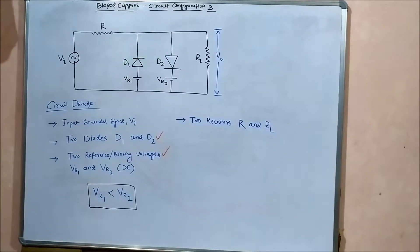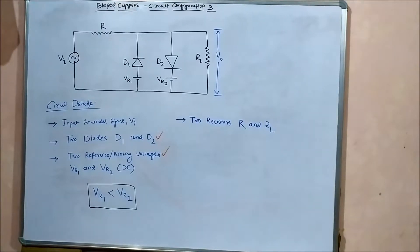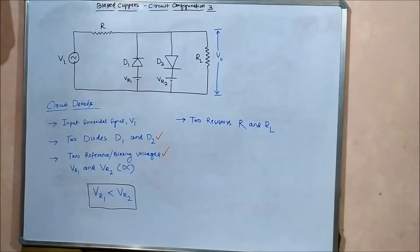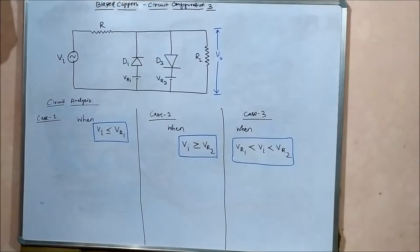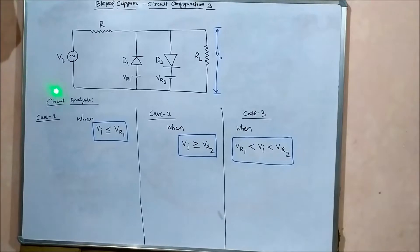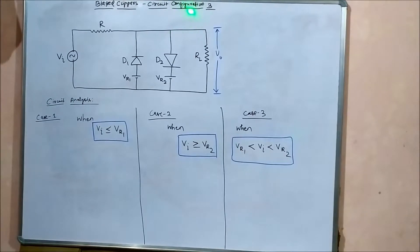The remaining things are the same: the input sinusoidal signal voltage, the resistor R which protects diodes D1 and D2 from excessive voltage or current surges, and the load resistance across which the output is calculated. Please check out bias clipper circuit configuration one and two videos before this one, for better understanding.